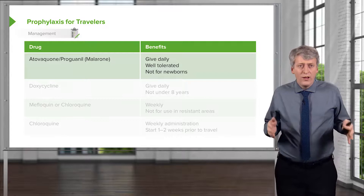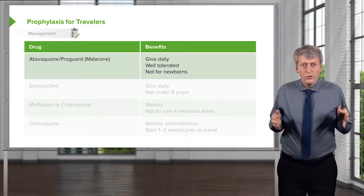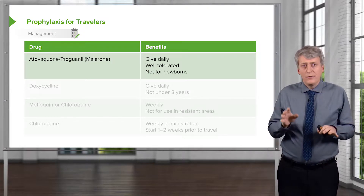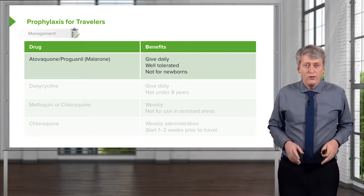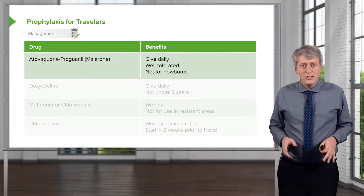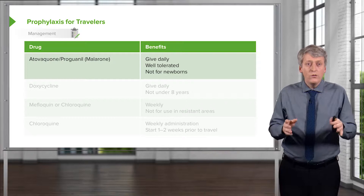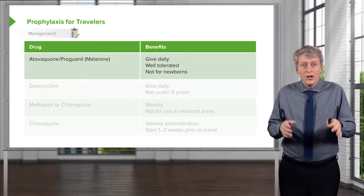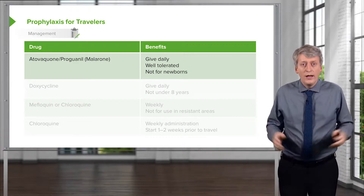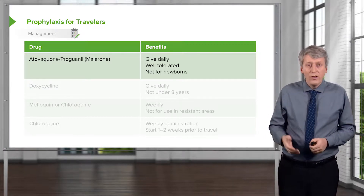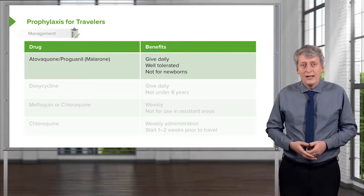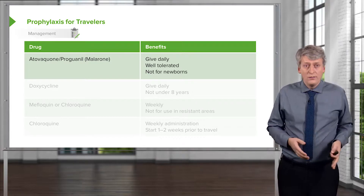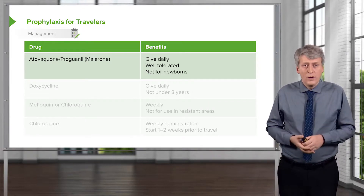Generally, we like to prophylax people before they travel to an endemic area. I'd like to plug a website from the CDC for international travelers: if you go to the CDC website, you can plug in the country and it'll tell you what you need to watch out for when traveling there. It's remarkably useful. In many countries, especially in equatorial areas around the world, we would recommend prophylaxis for people traveling to that endemic area, and sometimes certain prophylaxis is required in certain areas.